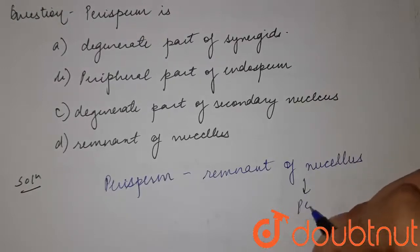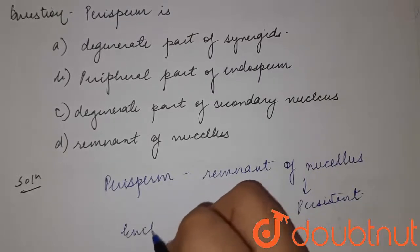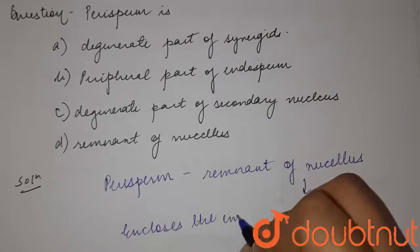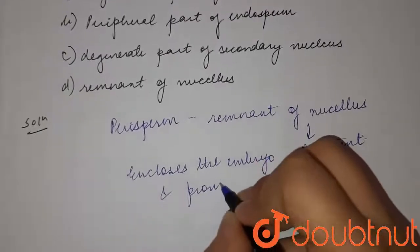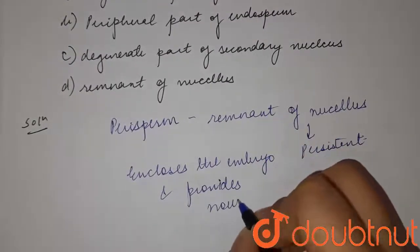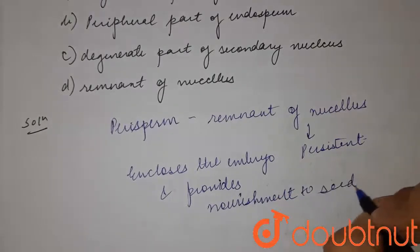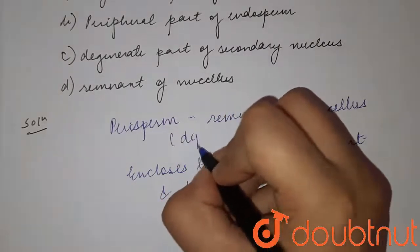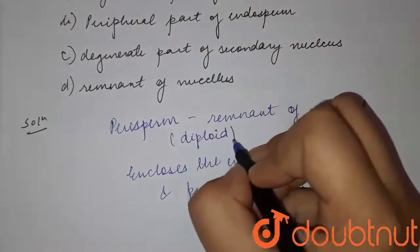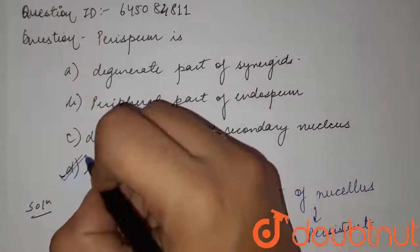It encloses the embryo and provides nourishment to the seeds. It surrounds, stores food, and provides nourishment to the embryo in endospermic seeds, and these are diploid in nature. So the answer to the question is option D — remnant of nucleus.